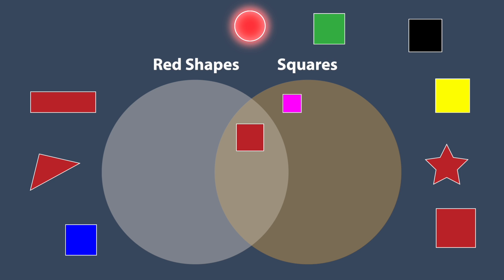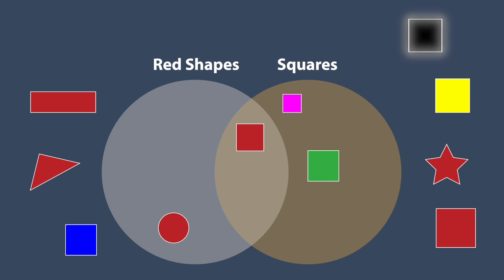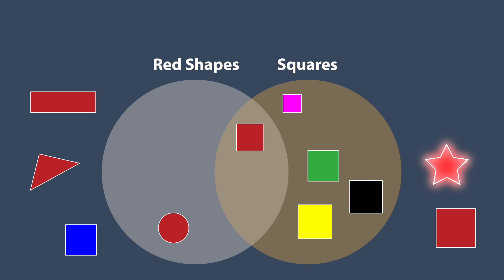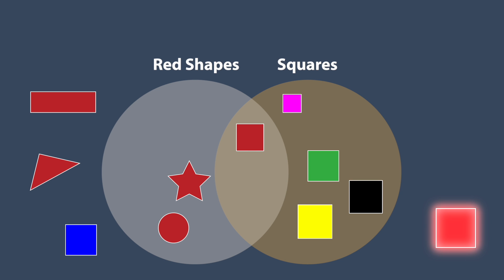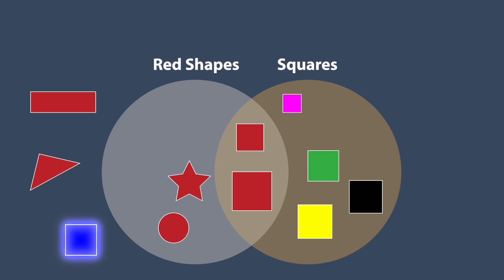The red circle is not a square, so it goes in the left circle with the red shapes. This square is green, not red, so it goes in the right circle. This black square is not red, so it goes in the right circle with the squares. This is a yellow square, so it goes in the right circle. The red star is not a square, so it goes in the right circle. This big square is red, so it goes in the overlapping section. This blue square is not red, so it goes in the right circle.